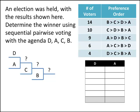So our first matchup is D versus A. Using the same process that we did with the Condorcet method, we can figure out that in a D versus A election, D defeats A 28 to 15. So D moves on to the next round.